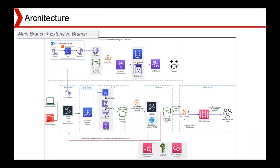Let's move to the architecture. Our team has two branches. The main branch is today's focus — you can see it in the lower bar. We divide the main branch into five components: data storage and data ingestion, data replica and recovery plan, the ETL part, the modeling part, and the data serving part.